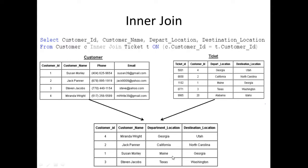So we're going to get Susan Morley — she's going from Maine to Georgia. And then we also have customer ID number two, which also matches with a record in this ticket table, so we're going to get Jack Panner. Jack Panner is going from California to North Carolina. Number three here, Stephen Jacobs, is also present within this ticket table, so he will also be returned.